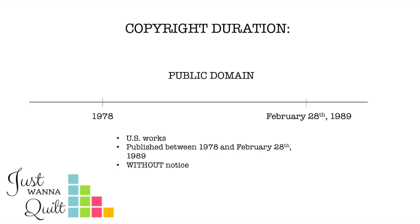Welcome back to part five: 1978 to February 28, 1989. The law changed in 1978 — it's a totally different law. But for domestic works, if you didn't have proper notice, it's in the public domain. So look at your magazines or the patterns you have from 1978 to February 28, 1989 — if there's no proper notice, it's in the public domain. It has to be a US publication, not a foreign publication. If it does have notice, it's protected for a really long time, and we'll talk more about that in another video.